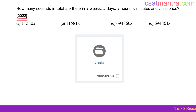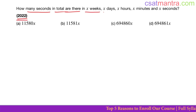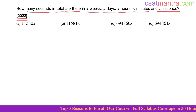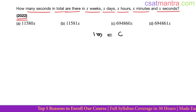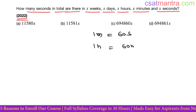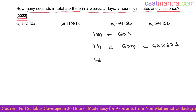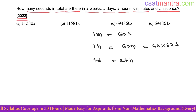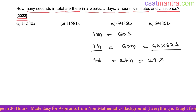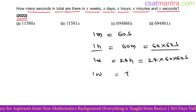2022 question based on clocks: how many seconds in total are there in x weeks, x days, x hours, x minutes, and x seconds? One minute has 60 seconds, one hour has 60 minutes — 60 into 60 seconds. One day has 24 hours, meaning 24 into 60 into 60 seconds.